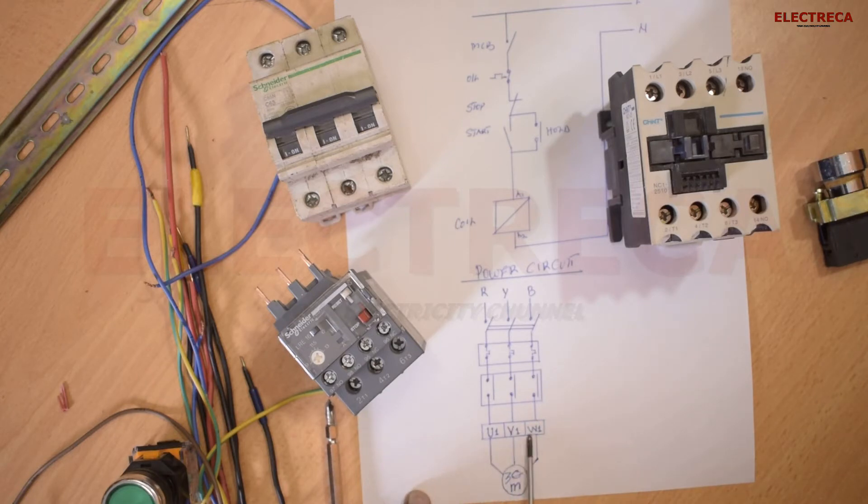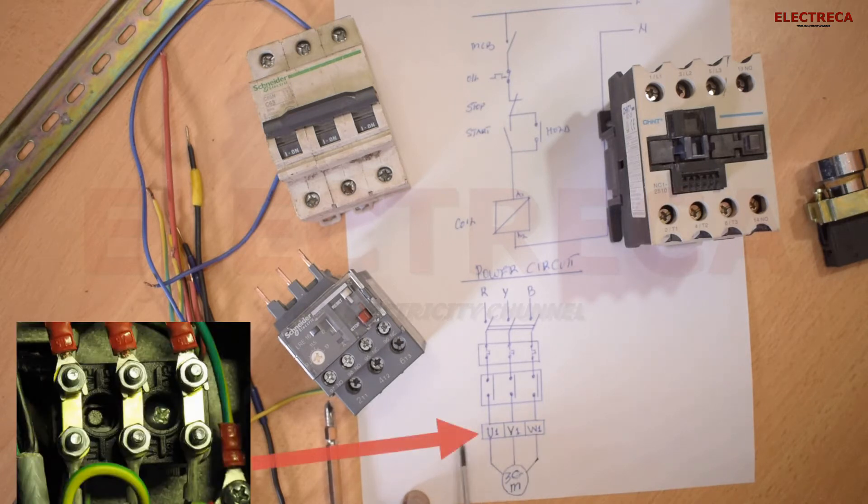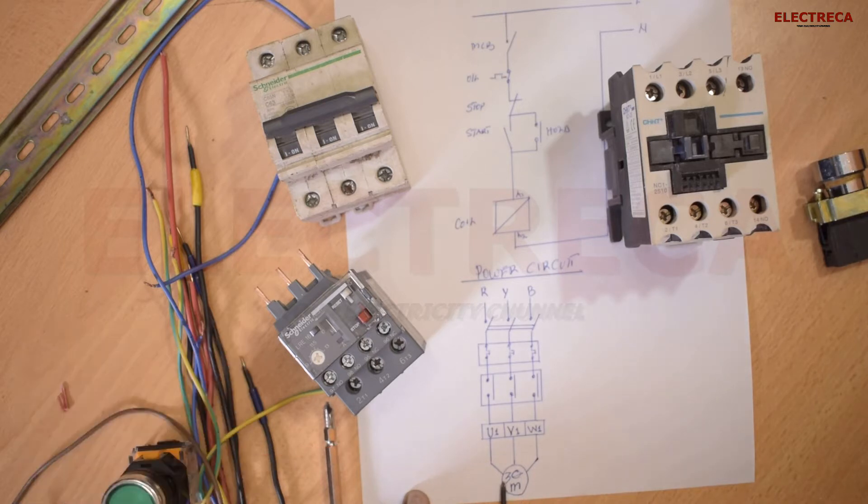Now these would be your termination block on your motor where you have the U1, V1, and W1. Now this is your motor which is connected in a star. All motors that run directly online are in star.